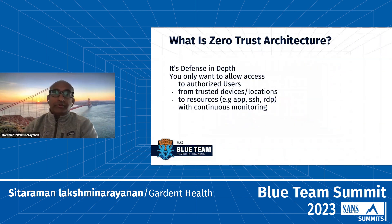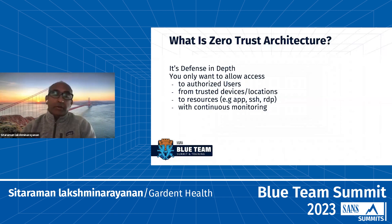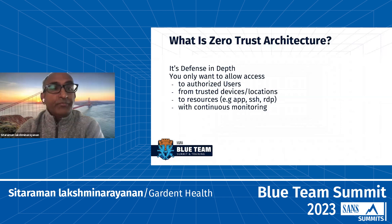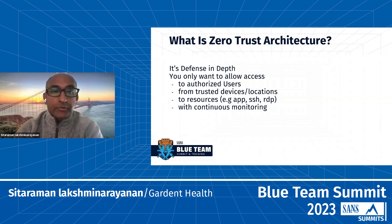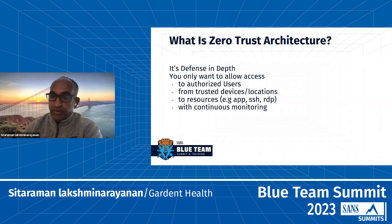Zero Trust is defense in depth. What we are trying to do is only allow access to authorized users from trusted devices or trusted locations. If you're a geographically distributed company, you need to know which locations are approved and which are not. Access is granted to resources — your applications, SSH, RDP, web applications, APIs. With all kinds of controls, we want strong authentication or MFA, fine-grained access control, and visibility and monitoring to make sure only the right users are doing the right things.